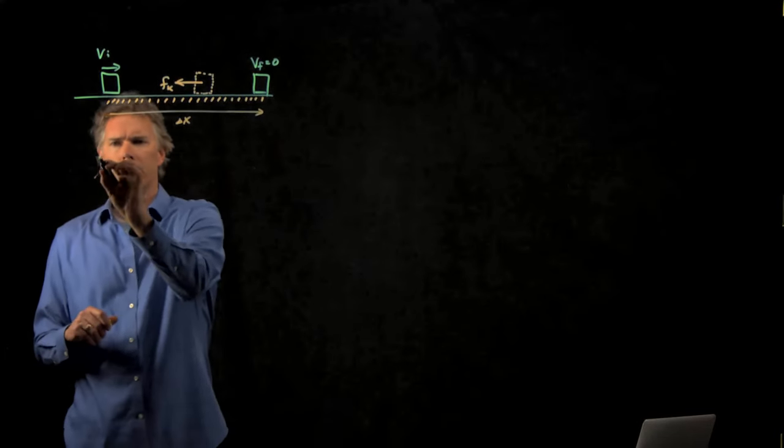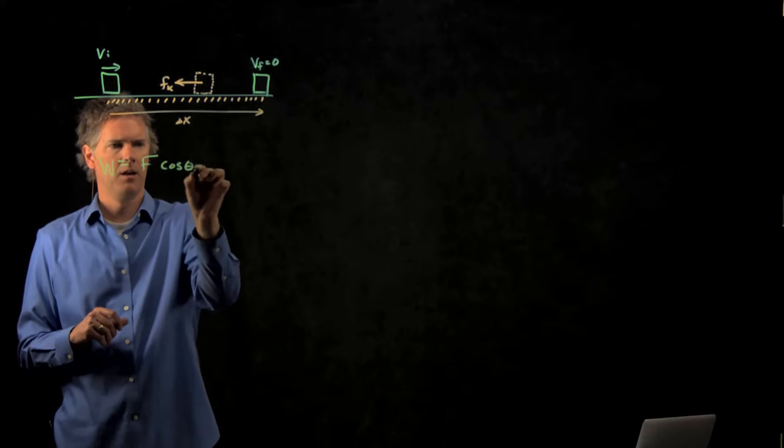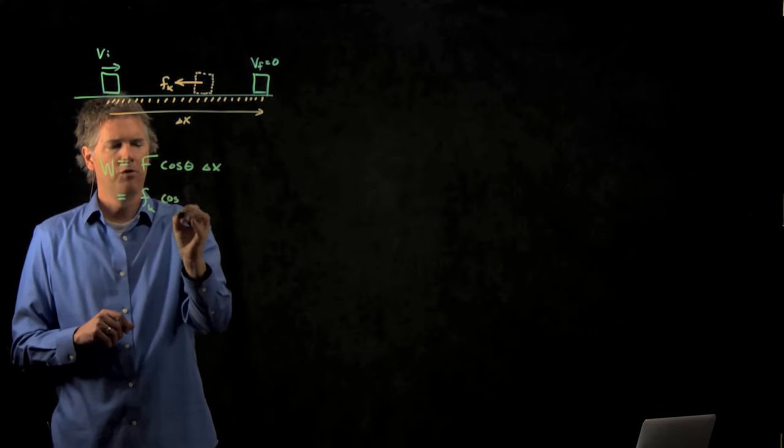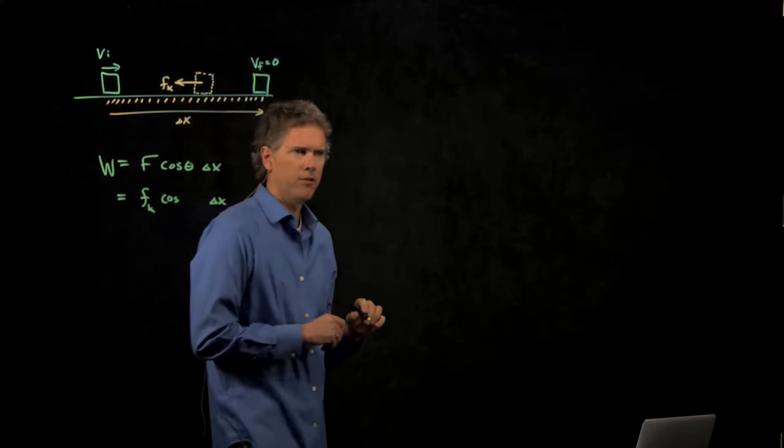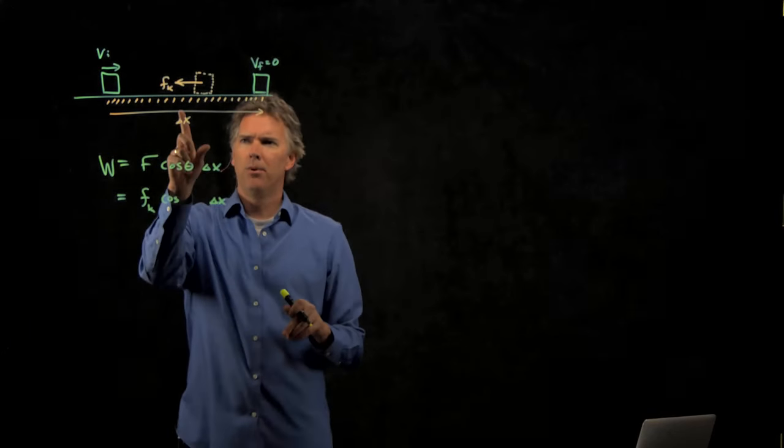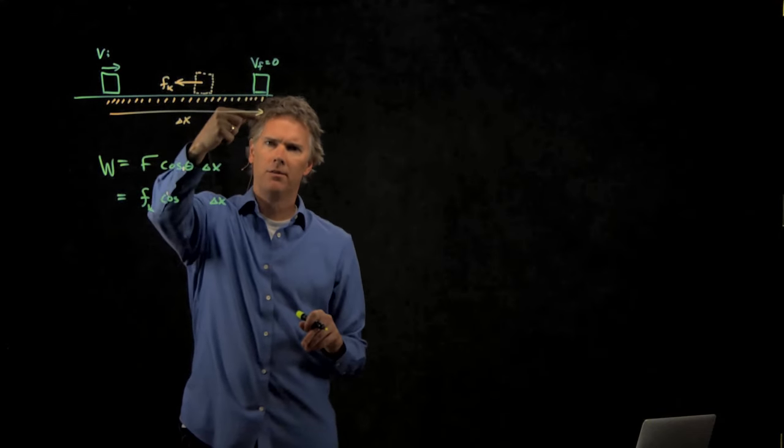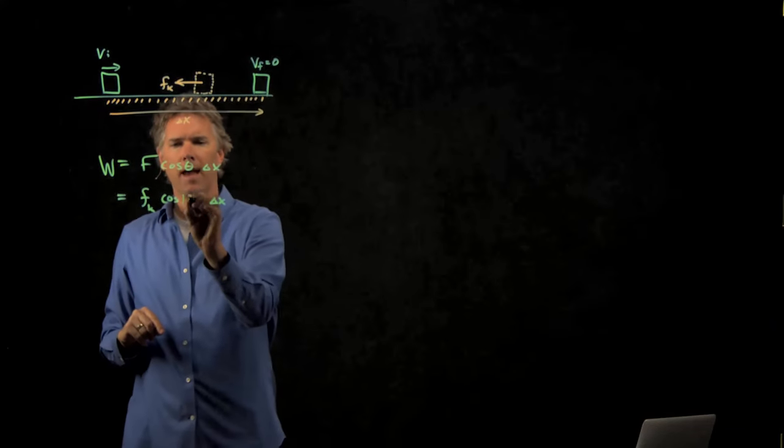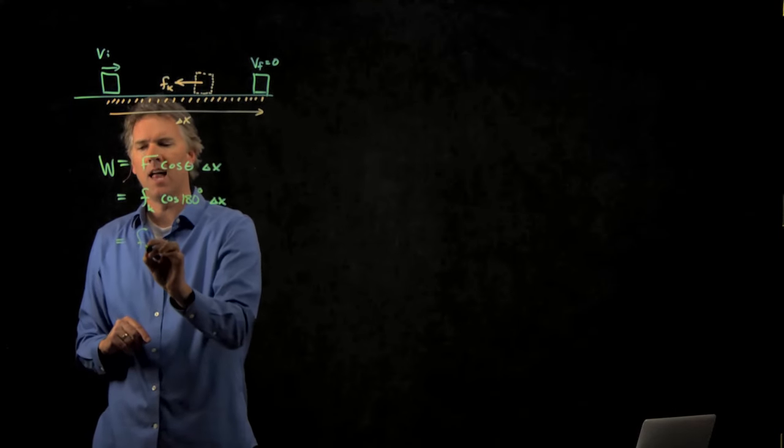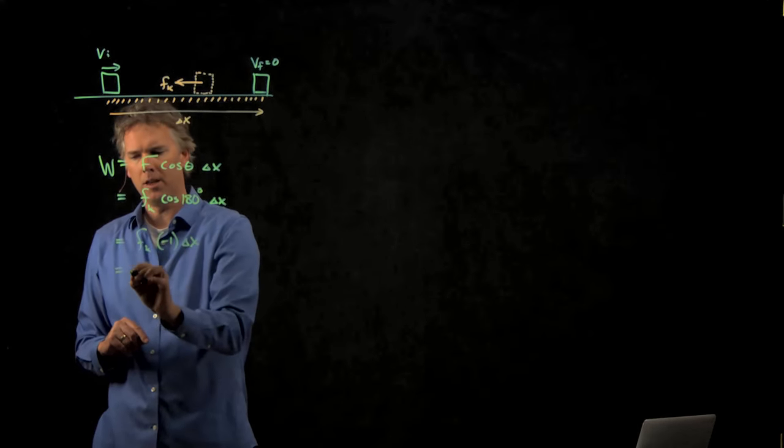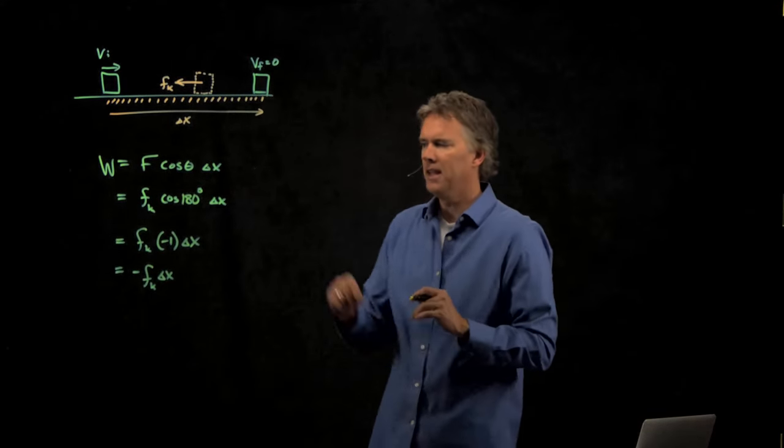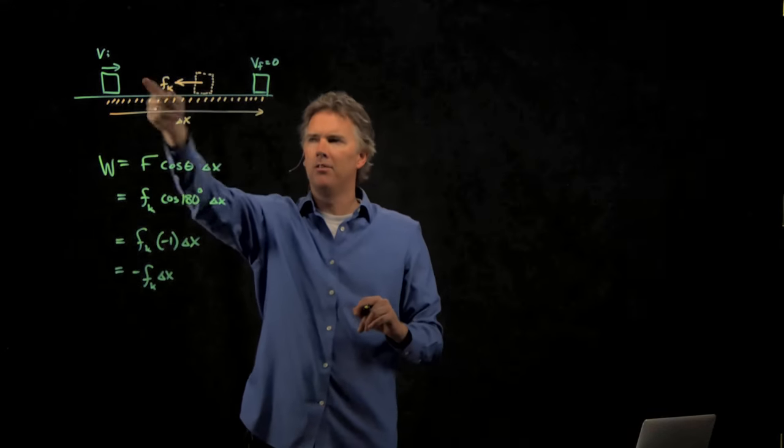So what does work? Work is f cosine theta delta x. The f here is frictional force, fk, cosine of the angle between them, and then delta x. What do I need to put in there for the theta? I need to put in 180 degrees, because delta x is this way, but f is that way. And so the angle between them is in fact 180 degrees. What's the cosine of 180 degrees? Negative 1. And so this whole thing becomes negative fk delta x. Work due to dissipative forces is negative because the force is always opposite the motion.